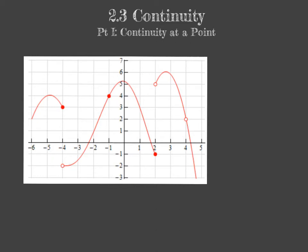In this video we'll talk about exactly why mathematically the graph is not continuous at those three points, and we will prove using limits and function values why it's not continuous. We'll also prove why at certain other points, such as when x is negative 1, our graph is nice and continuous. So let's go into the calculus definition of continuity at a point.